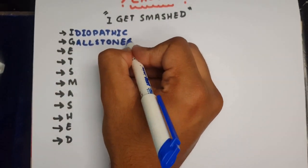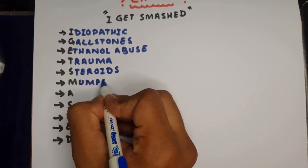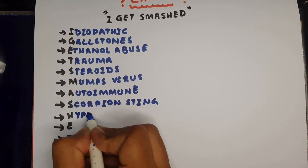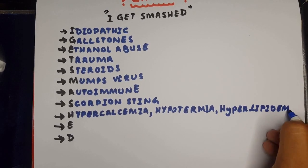And of all these causes, gallstones and ethanol abuse are the ones to look out for, which contribute to around 35% each of all the cases of pancreatitis, closely followed by idiopathic causes, which are around 10-30%.